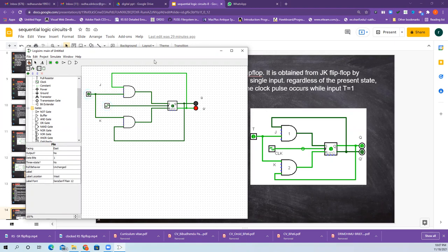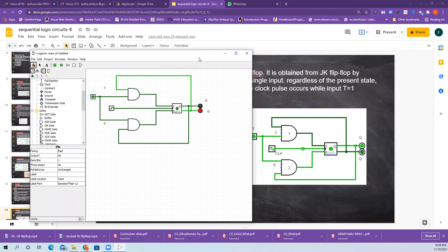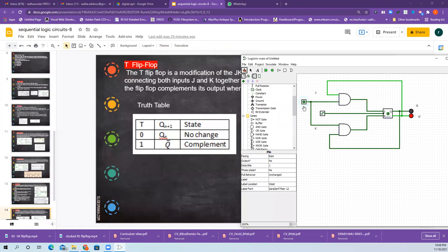So what is the output? See here, when I give zero, what will happen? No change, right? See here, there is no change. It remains unchanged. Now I give a one. It is negative, so there is no change.